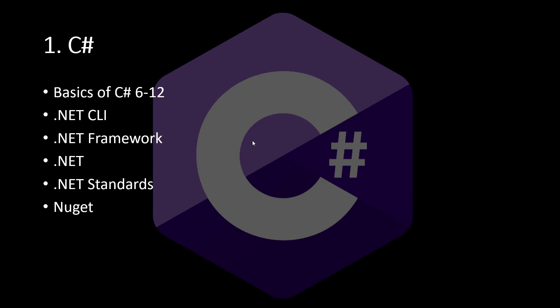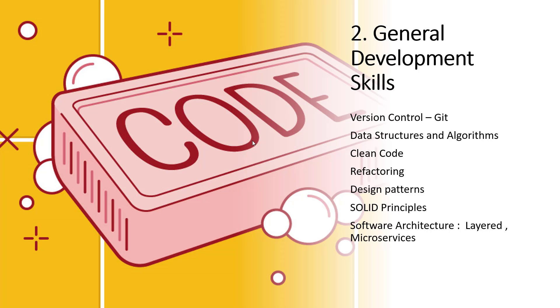In C Sharp, we will cover C Sharp basics, features 6 to 12, .NET CLI, .NET Framework, .NET, .NET Standards, and NuGet. We will cover all the basics from beginner to professional in my course.